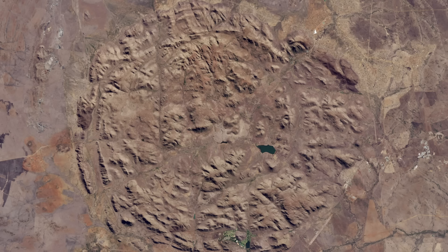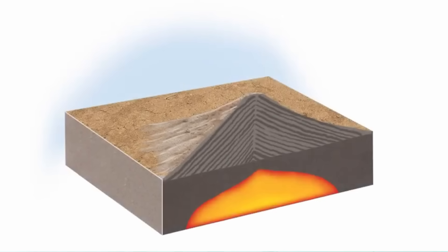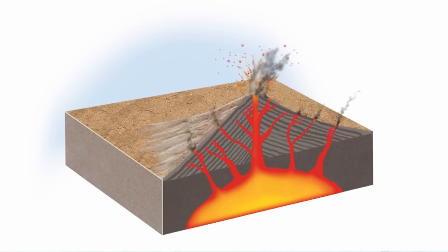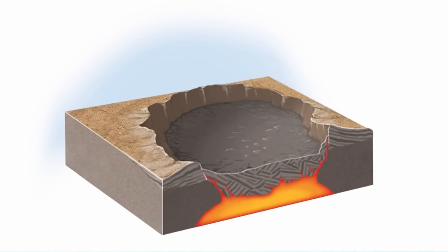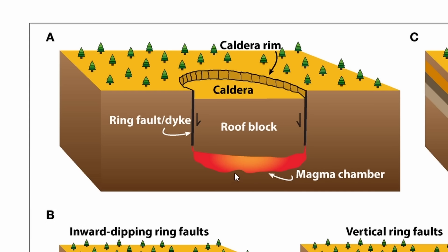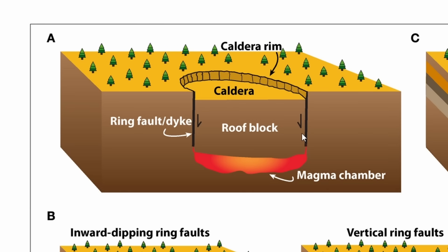These ring dike intrusions are directly created by the collapsing of a volcano into a caldera, also known as cauldron collapse. A cauldron collapse is caused when the magma chamber of a volcano empties out after an eruption. This causes a block called the roof block to fall down into the magma chamber. The magma in the chamber will usually go back up through the ring fault where the roof block fell, and may even reach the caldera, filling it up and forming a lava lake.